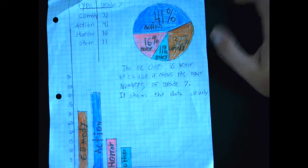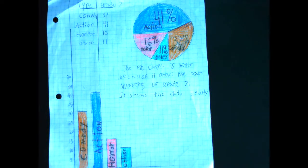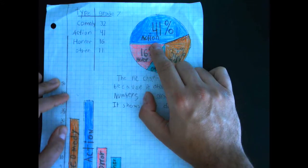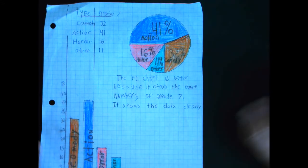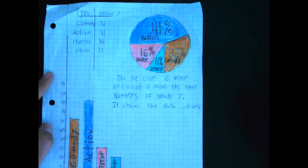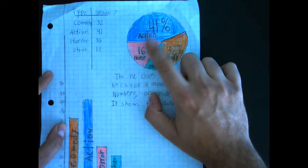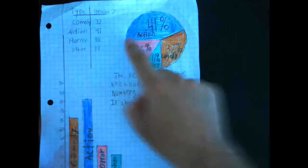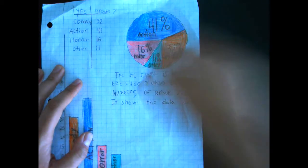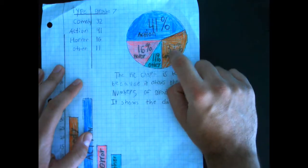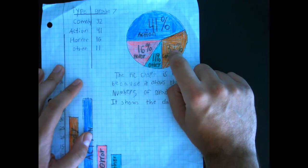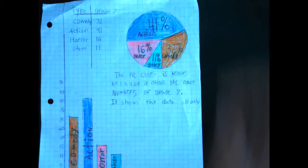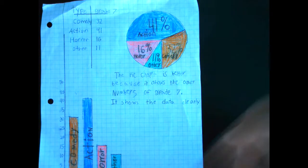So now my next question is, this group right here, I like how they colored it. I get to easily see the difference. How were they able to determine how much to shade? How were they able to determine that this much is 41%? How is this 32%? 16 and 11. Those are not easy numbers to put in a circle graph.